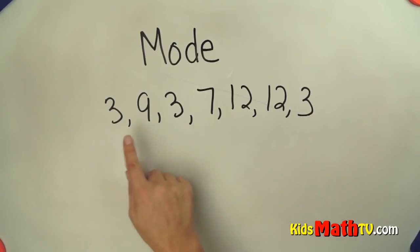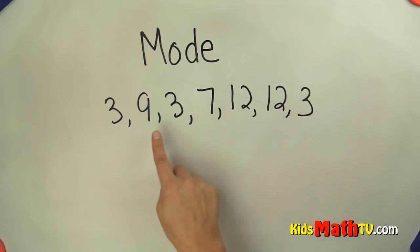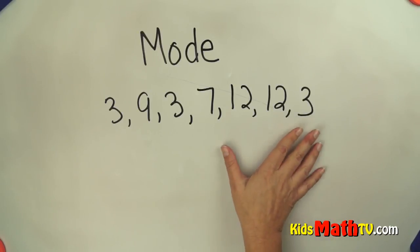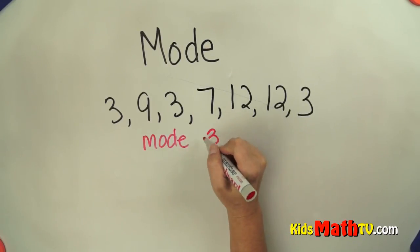So if we look at these numbers I can see there's one, two, three threes in this set, one nine, one seven, and two twelves. So the number that happens the most in this case is three. So the mode of this set is simply three.